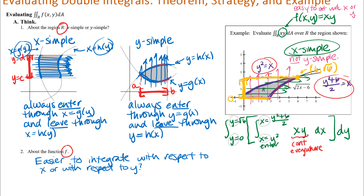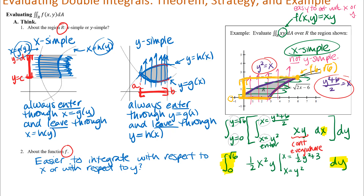Starting on the inner integral while keeping the outer integral from 0 to √6, I integrate xy with respect to x, treating y as a constant. The antiderivative is (1/2)x²·y, evaluated from x = y² to x = (1/2)y² + 3. Notice that the outer integral sign, differential dy, and limits do not disappear — even though we're only working on the inner integral, they must remain for correct notation.